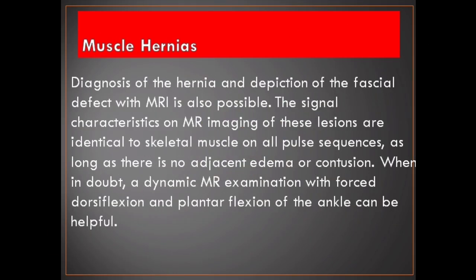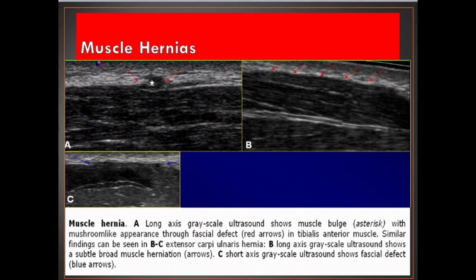Diagnosis of the hernia and depiction of the fascial defect with MRI is also possible. The signal characteristics on MR imaging are identical to skeletal muscle on all pulse sequences, as long as there is no adjacent edema or contusion. When in doubt, a dynamic MR examination with forced dorsiflexion and plantarflexion of the ankle can be helpful. This image shows muscle hernia.